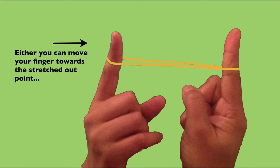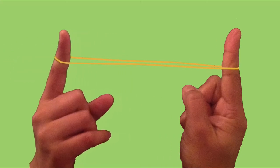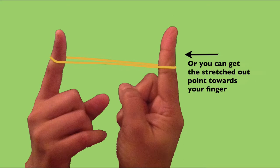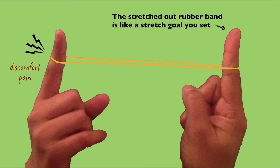You can either move your finger towards the stretched out point, or you can get the stretched out point towards your index finger. This stretched rubber band is like setting a stretch goal.